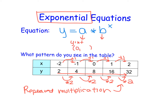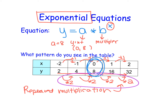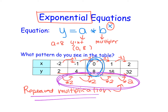In this particular case, when x is 0, y is equal to 8, so my a value is equal to 8 — that's my y-intercept value. Then b, the exponent, tells me it will be repeatedly multiplied — that is called my multiplier. My multiplier is what's being repeatedly multiplied, which in this case is 2.